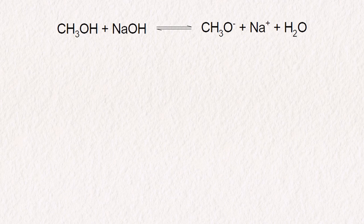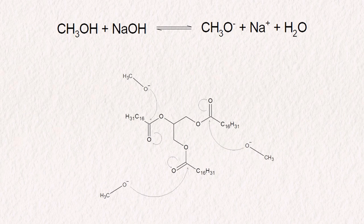What is done first is that the sodium hydroxide is dissolved in some methanol. This causes an equilibrium reaction between the sodium hydroxide and methanol to take place, which forms methoxide ions, sodium ions, and water. These methoxide ions can be used to attack the triglycerides and force a transesterification to take place.